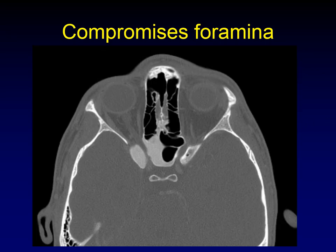Famously, fibrous dysplasia compromises underlying foramina. Here's a great example of expansile bone in the sphenoid wall and in the anterior clinoid process coming together to compress the optic canal. You can imagine the effect that this would have on vision — compromising foramina is one of the most important clinical problems that comes from fibrous dysplasia in the midface and skull base.